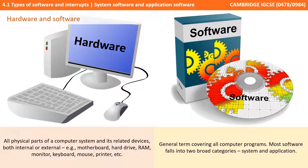Software is a very general term that covers all computer programs. Most software falls into broad categories such as application, system or utility software.